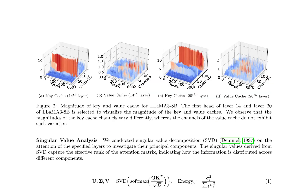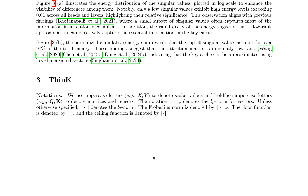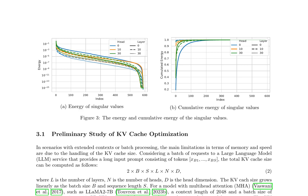The paper discusses the optimization of key-value (KV) caches in large language models, focusing on the magnitude of key and value caches for LLAMA 3 8B. It is observed that the magnitudes of the key cache channels vary differently, whereas the channels of the value cache do not exhibit such variation. A singular value analysis reveals that only a few singular values exhibit high energy levels, suggesting a low-rank approximation can effectively capture the essential information in the key cache. The top 50 singular values account for over 90% of the total energy, further supporting the low-rank nature of the attention matrix.